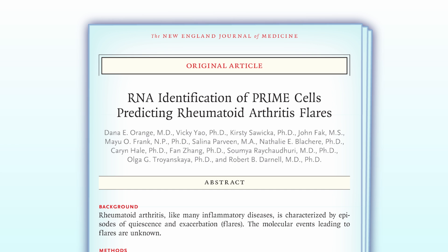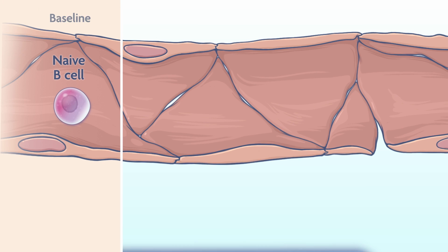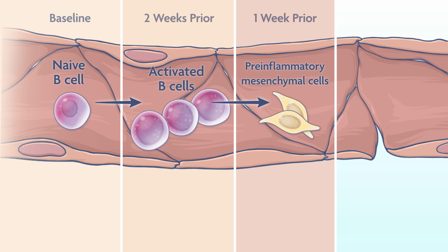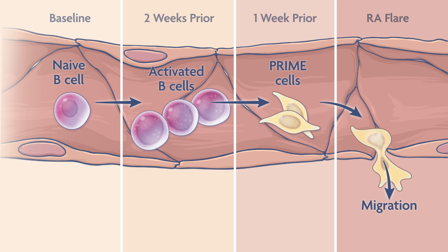The actual mechanisms for how one goes from remission or low disease activity to a flare are not certain. A 2020 study showed that in the weeks leading up to a flare, circulating B cells become activated, followed by the appearance in peripheral blood of pre-inflammatory mesenchymal cells, or PRIME cells. PRIME cells appear about a week before a flare and are hypothesized to migrate into the synovium to trigger inflammation.